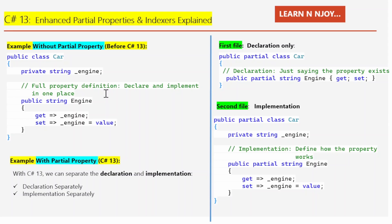Let's start with properties first. We are going to see the example without partial properties, before C# 13. Before C# 13, we had to define the entire property in one place. Let's understand with the help of an example. Here there is a public class named Car — as we know, classes are blueprints for creating objects in object-oriented programming.